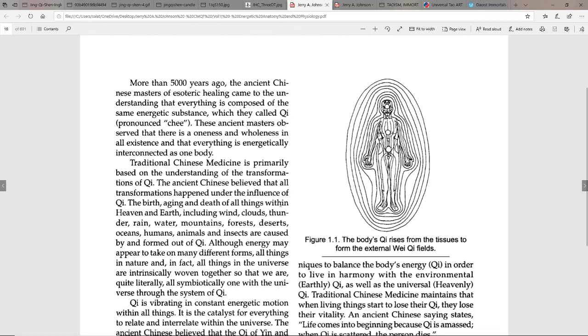Traditional Chinese Medicine is primarily based on the understanding of the transformations of qi. The ancient Chinese believed that all transformations happened under the influence of qi - the birth, aging, and death of all things within heaven and earth, including wind, clouds, thunder, rain.